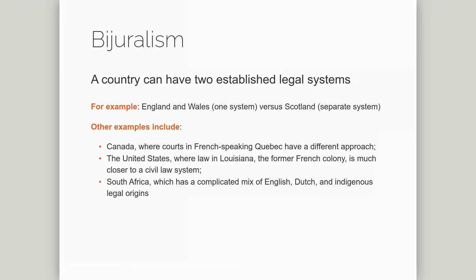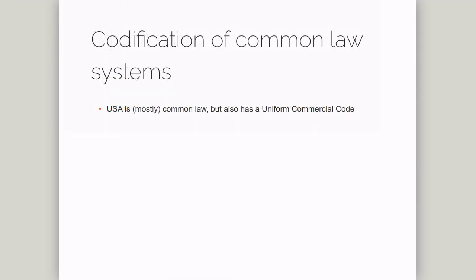Second, some common law countries have codes which set out principles in well-defined areas of the law. The United States is mostly a common law country. However, because the United States is a federal system, because states can make their own laws regarding commerce, and because commerce between states is desirable, many states in the US have adopted the Uniform Commercial Code. Consolidating existing laws and precedents into a single code, capable of spanning multiple states, is often advocated by legal reformers.